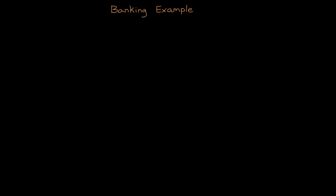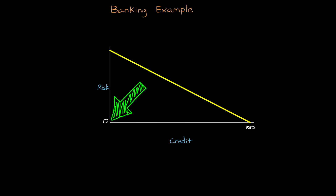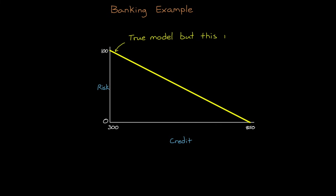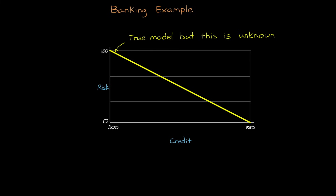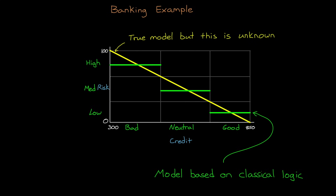Let's get back to our banking example. Let's say that the true underlying model that maps credit score to risk is a linear line, where perfect credit of 850 is 0% risk, and a credit of 300 is 100% risky. And let's say that we don't actually know this model because it's driven by really complex mechanisms, and all we have is this vague notion of bad, neutral, and good credit, and high, medium, and low risk. With classical logic, if we assign bad credit to high risk, neutral to medium, and good to low, we get a very discontinuous representation of the true underlying model.